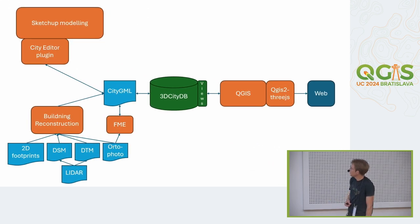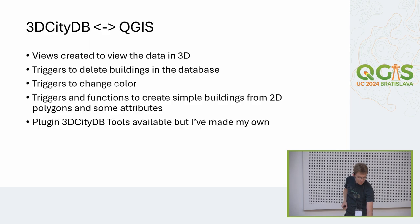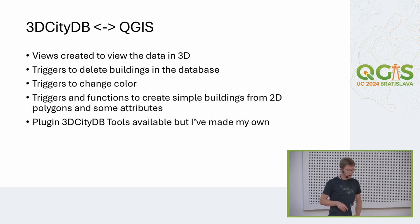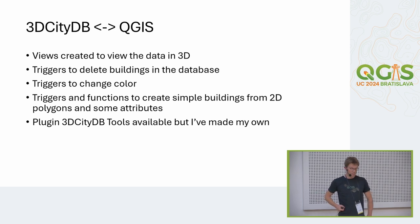Zooming in on the system — I will mainly focus on the database, QGIS, and the plugin. The data is loaded to the database with the importer and exporter tool that comes with the database. To view it in 3D you have to do some coding — you have some views created in the database to view the data in QGIS, and also created some triggers to do some simple editing: you can delete a building, change the color, or create a simple building from a 2D polygon and some attributes.